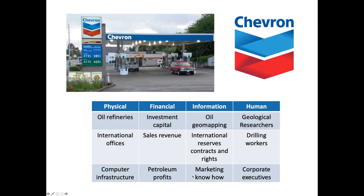Many of us, especially here in northern California, are familiar with Chevron Corporation — we know them primarily as a place to buy gasoline. But think of them as an organization. In order to bring petrochemical products to the marketplace, Chevron needs physical resources like oil refineries, international offices, and computer infrastructure. Chevron also needs financial resources like investment capital, sales revenue, and profits from selling petroleum products.